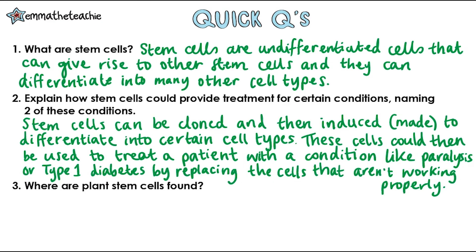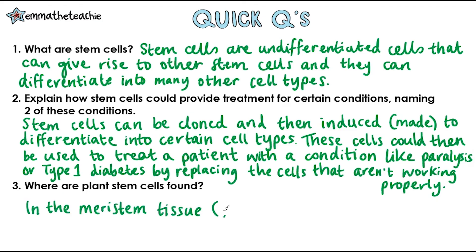Question three: where are plant stem cells found? In the meristem tissue, which is in the shoots and the roots.